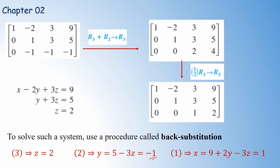Now you have a good idea of how to apply row operations to solve a linear system. Starting with the augmented matrix, apply row operations to convert the left-hand side into upper triangular form, applying the same operations to change B, and write down the equivalent system. Then using backward substitution you can find the solution.